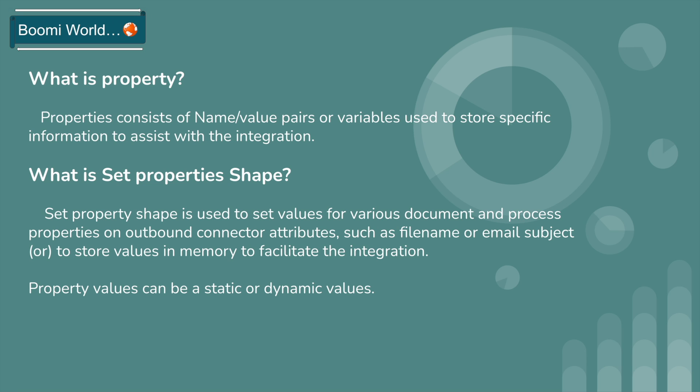Before going to know what set property shape is, we should first know what a property is. Properties consist of name-value pairs, or variables, used to store specific information to assist with the integration. If you want to store any value, you first have to configure that name and in that name you store that specific value.